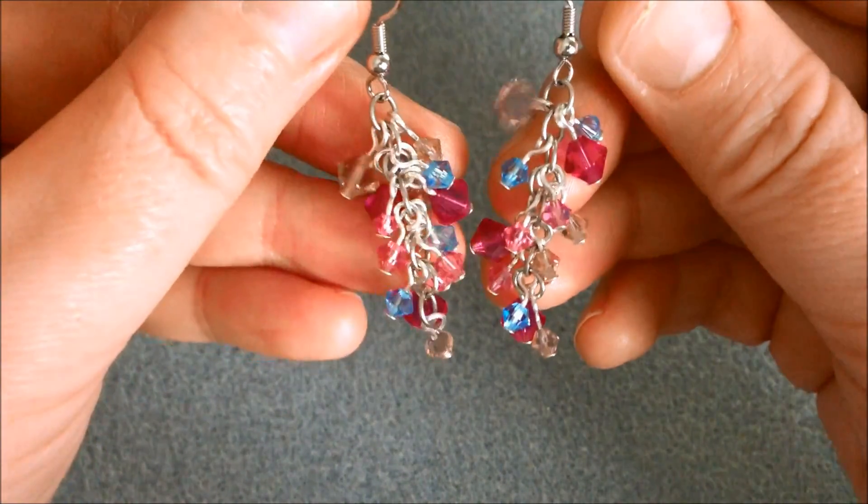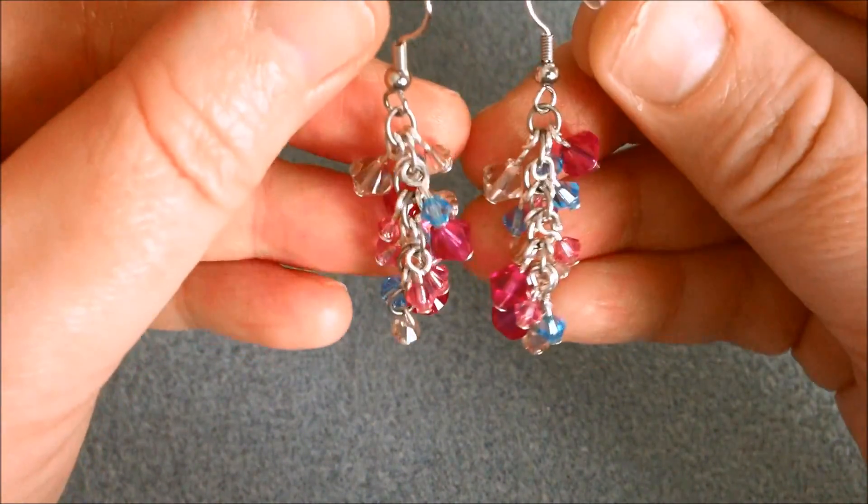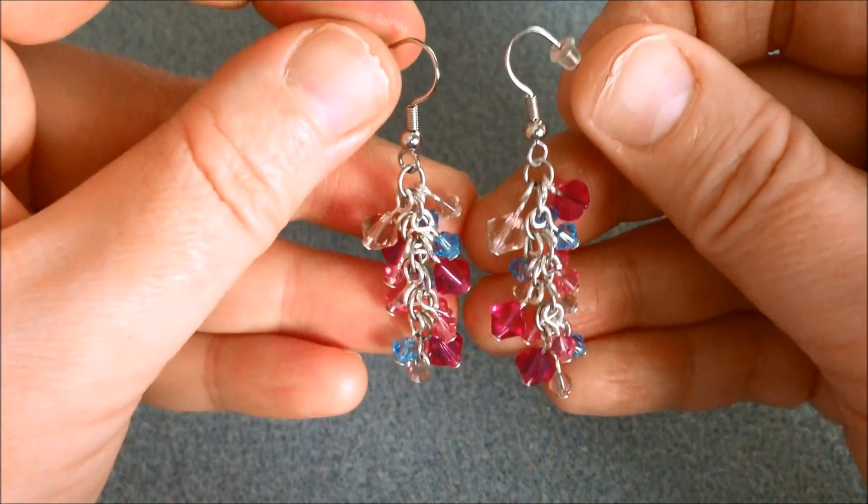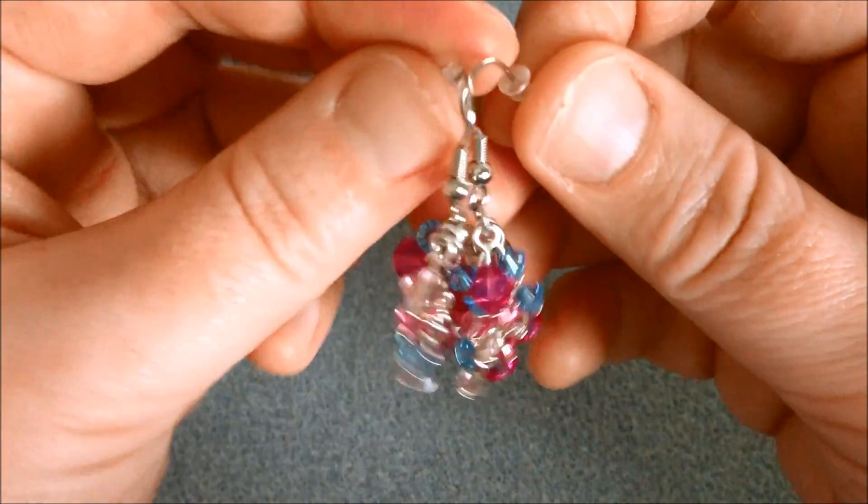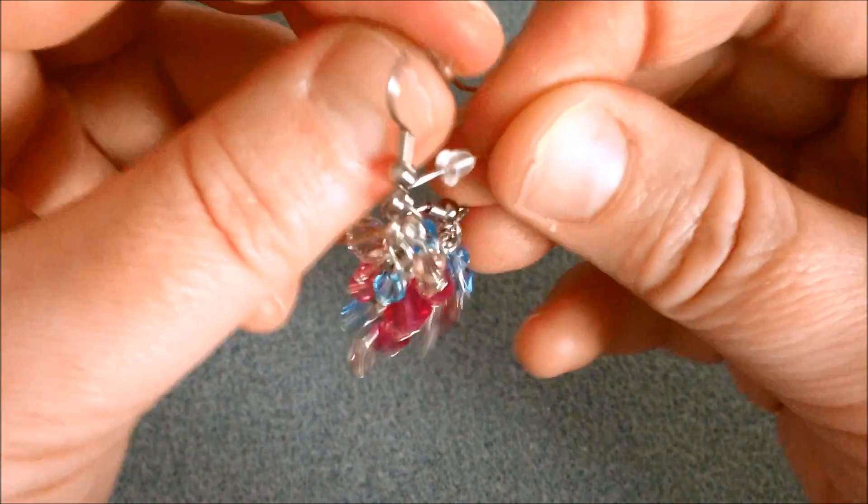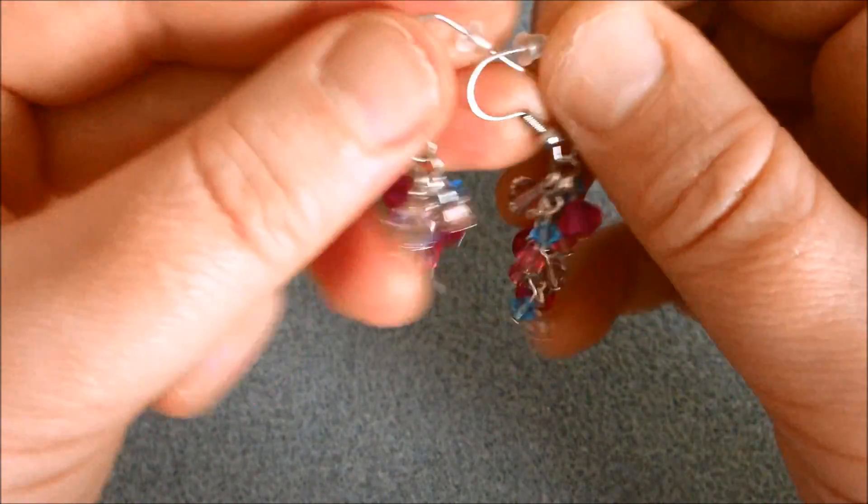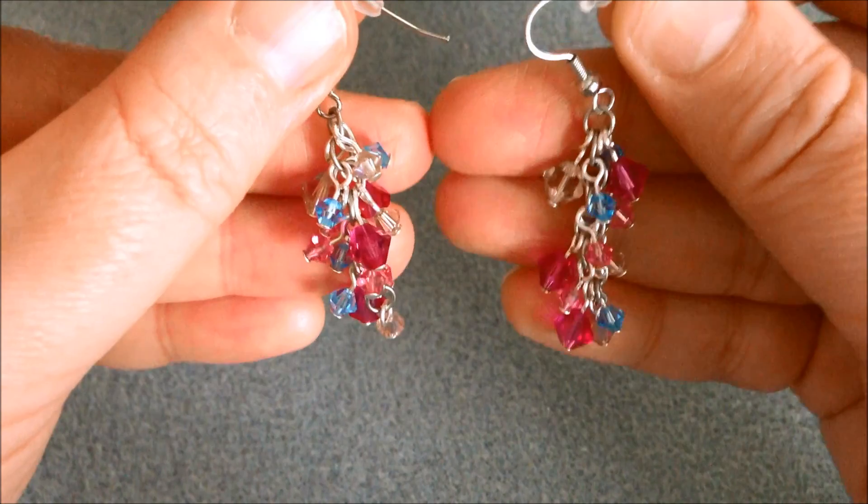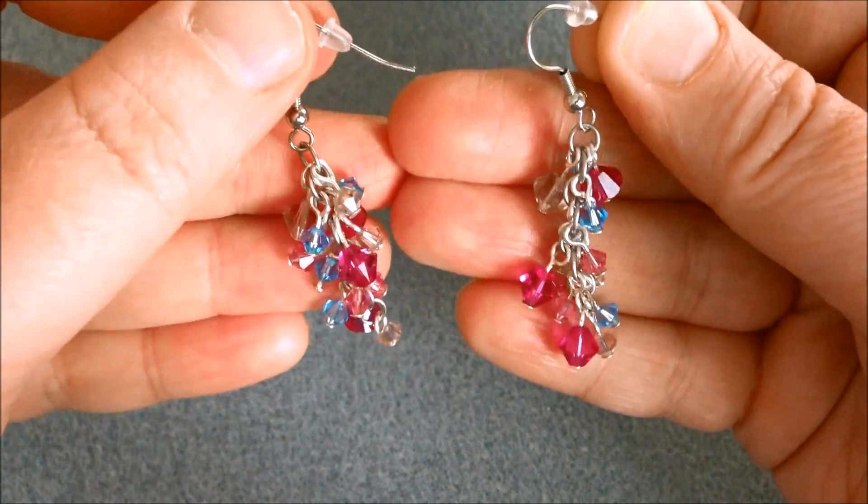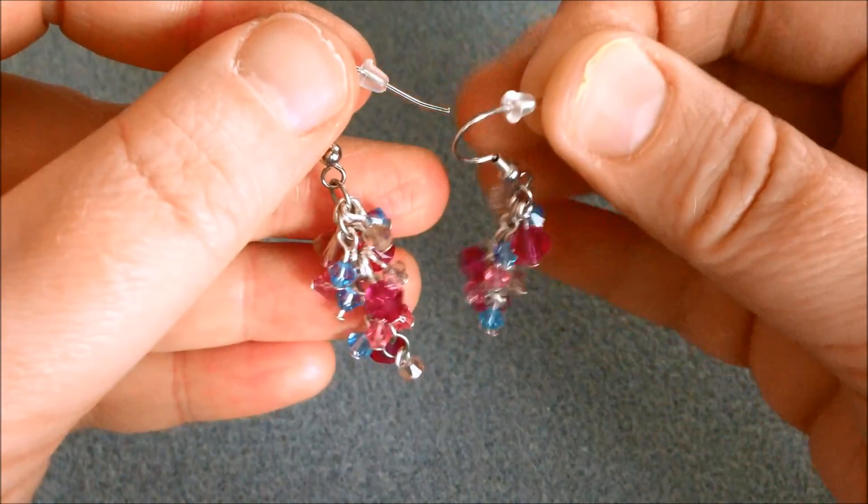They might be positioned a little bit differently here on the chain but the colors are the same and the amount of little danglers is the same. Now these are super super cute earrings and this is actually a great gift idea as well because this is not hard to make at all. It just takes a little bit of time to make the danglers and attach them onto the chain.